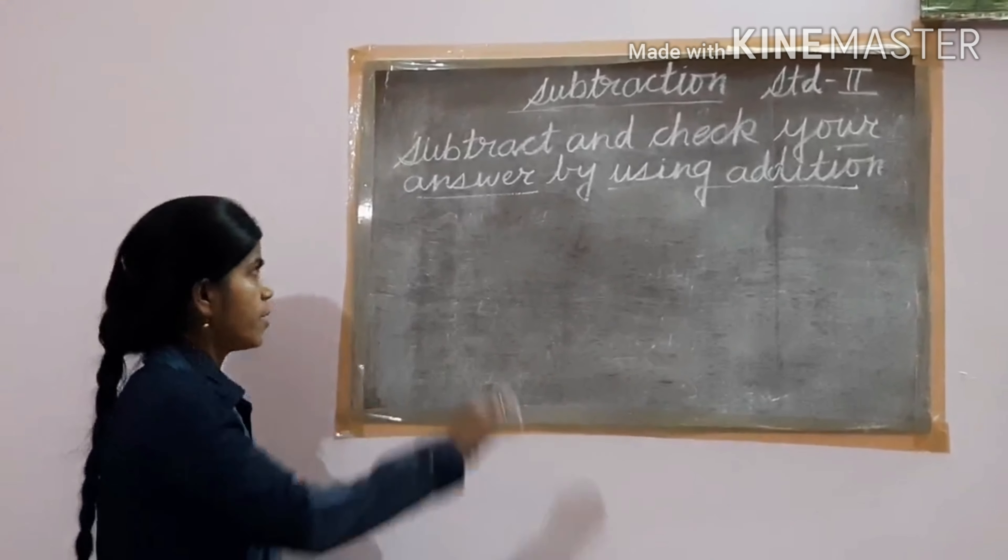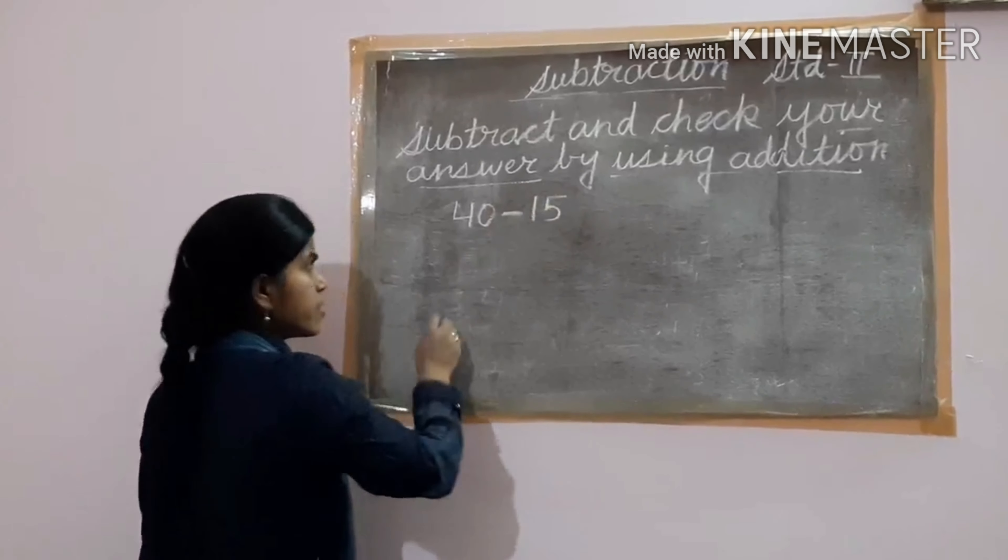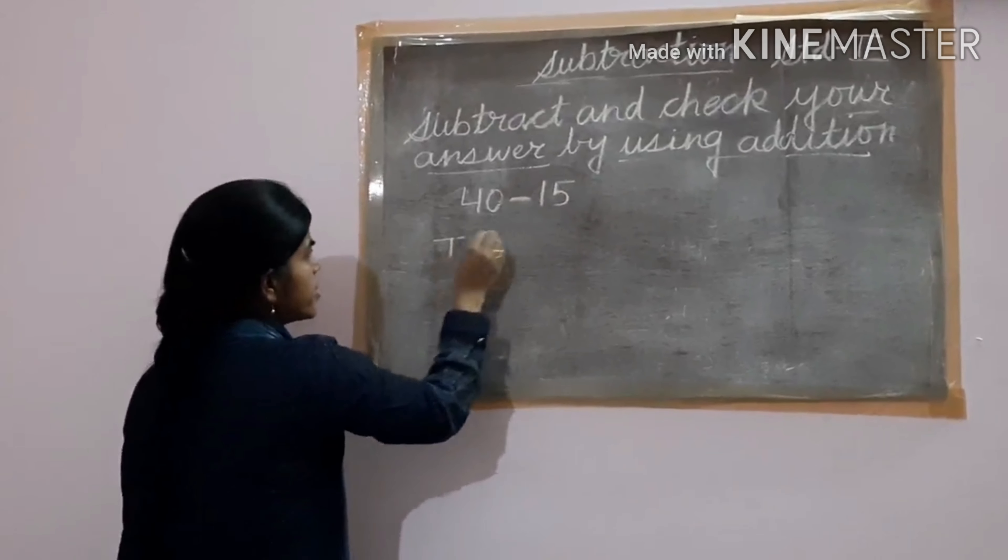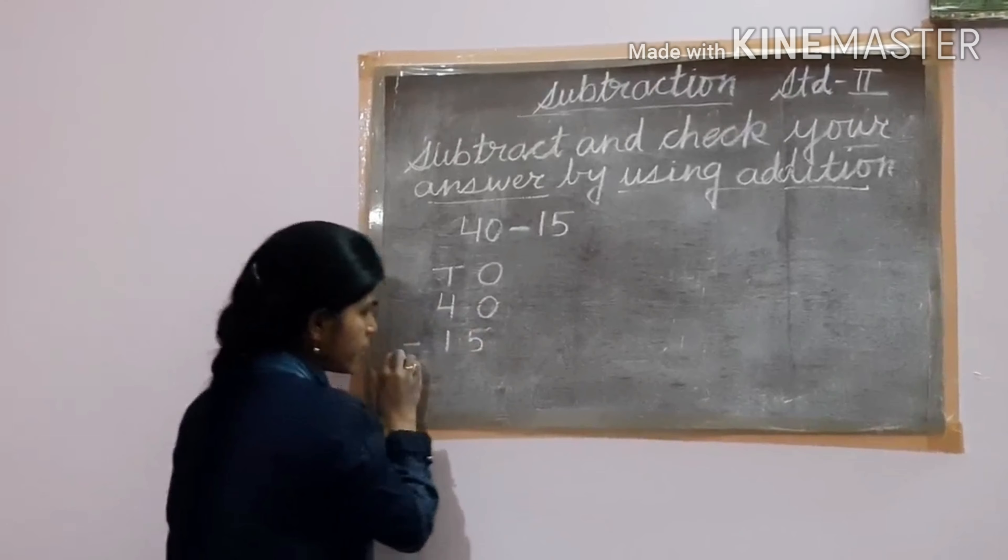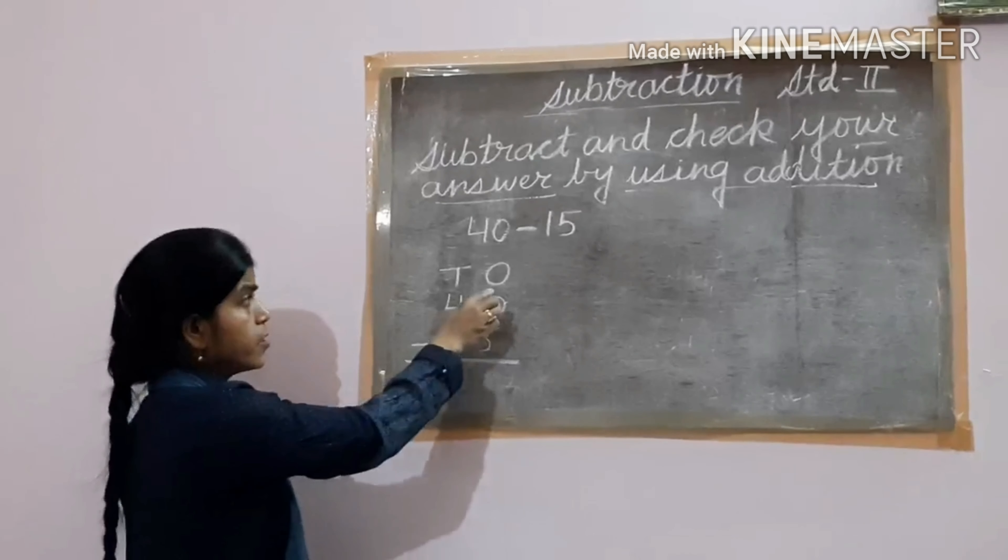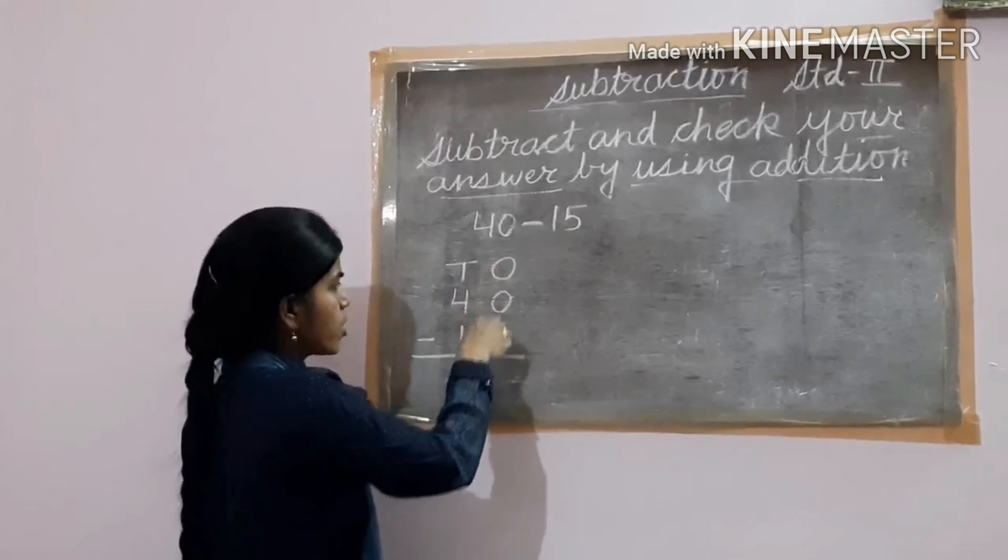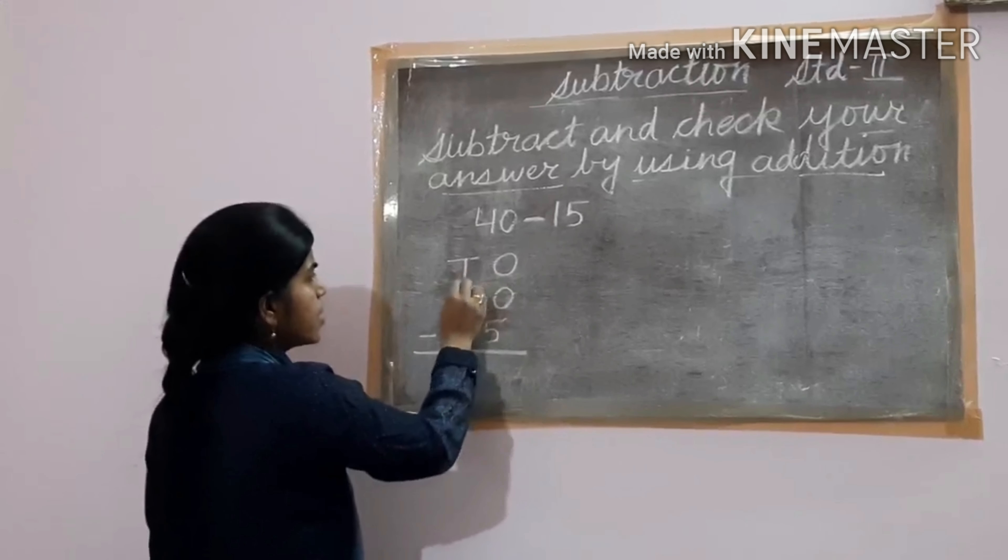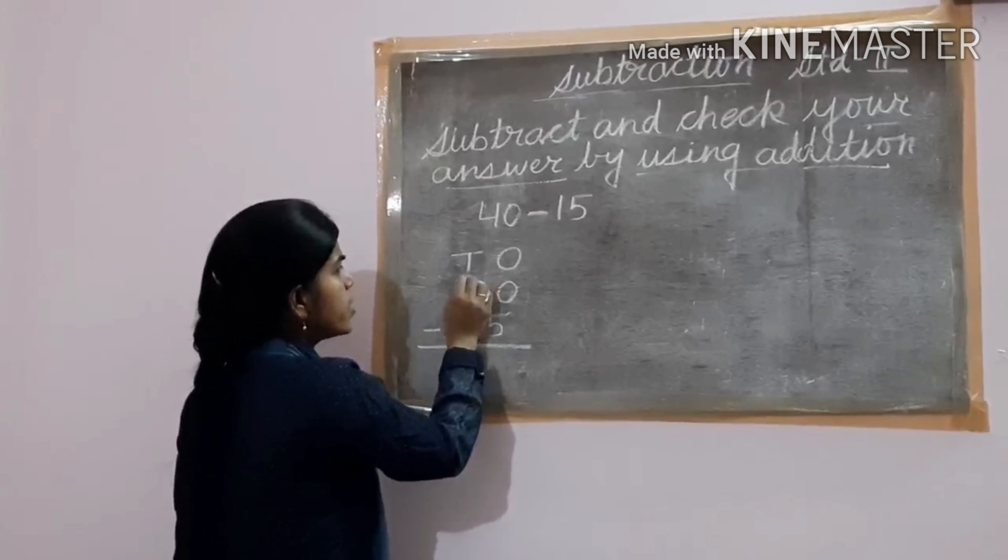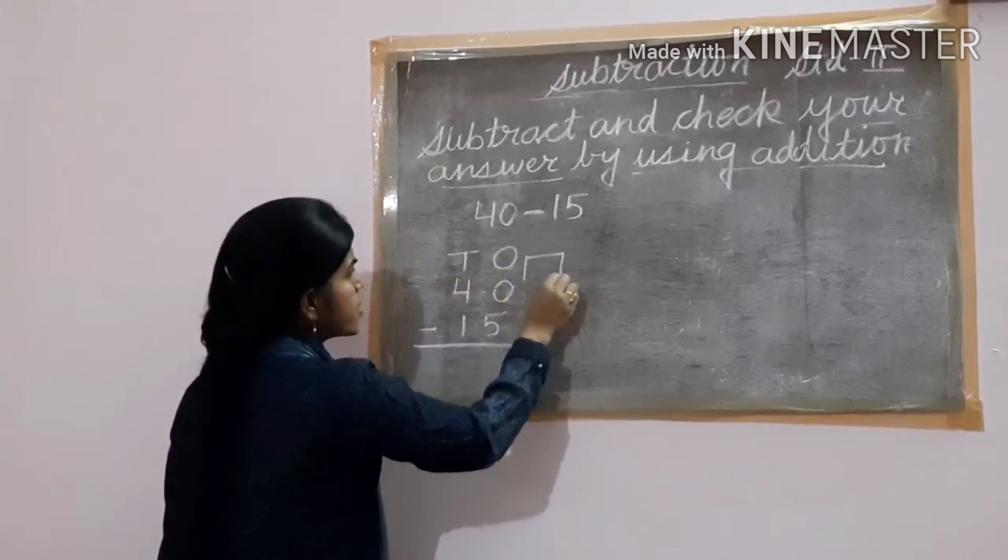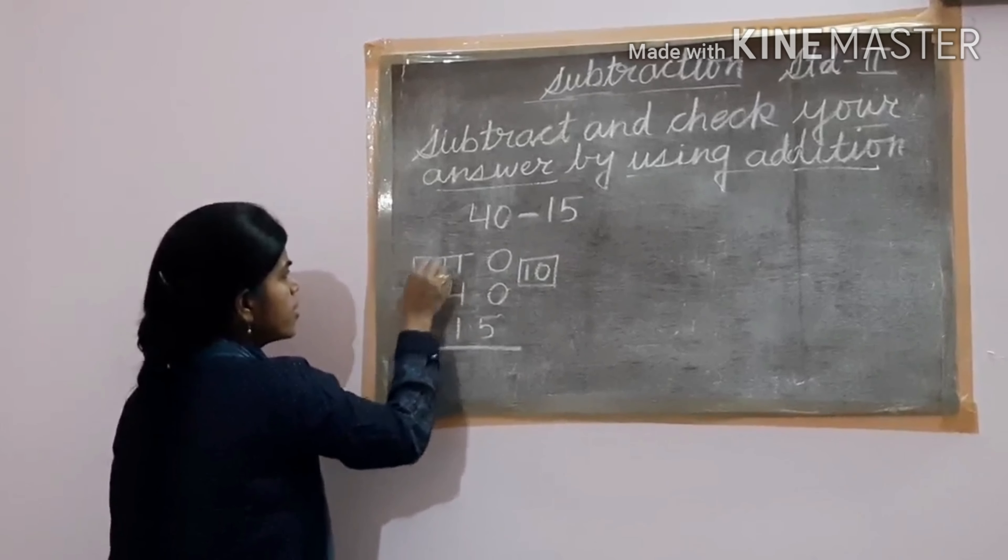One more example I am giving. If the number is 40 minus 15, the process is same. Tens and ones. Arrange the number: 4 tens, 0 ones, 1 ten, 5 ones, subtraction sign. Here, ones place is 0, but ones place has to subtract 5, then not possible. Again borrowing from the tens place. Then 4 tens. Here tens place has how many tens? 4. So here, given 1 ten. Then 1 ten plus 0 ones, that is 10. And here is 4 tens, 1 given, then here is only 3.